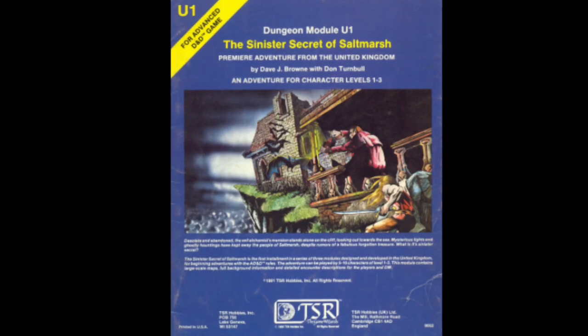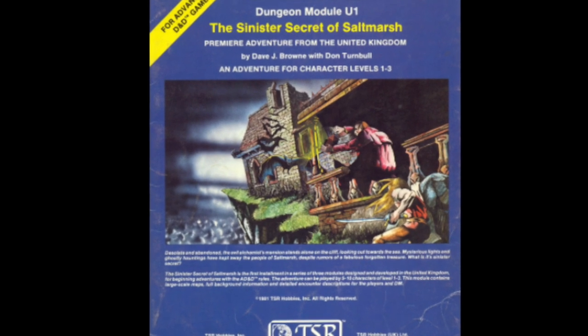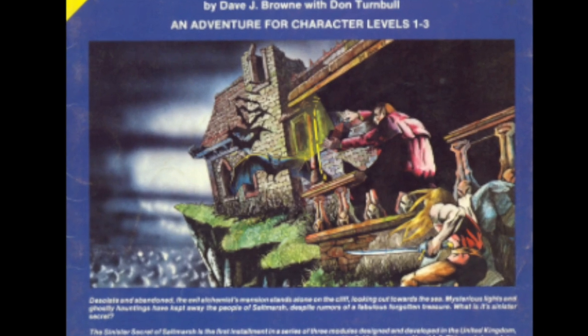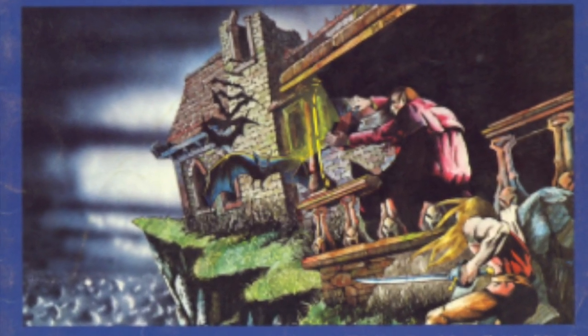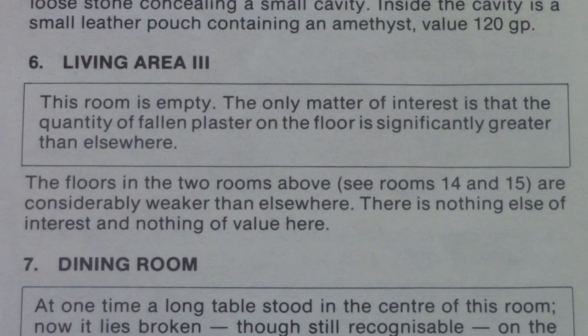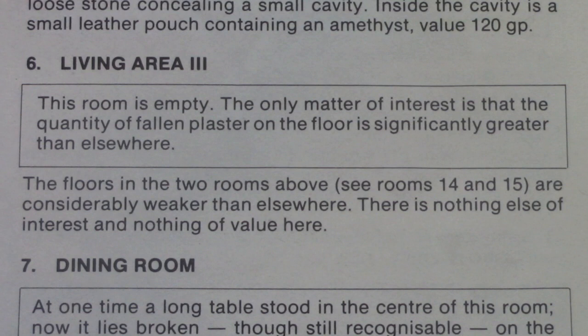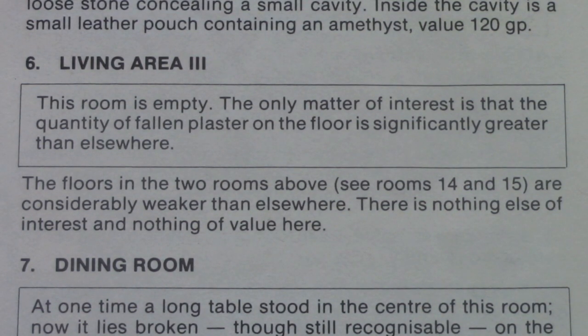Be careful when giving descriptions not to get too colorful and include extraneous details that the players are going to focus on. This happens in even professionally published work. This is the Sinister Secret of Saltmarsh — I think it's the first D&D module to contain mystery elements. Let's take a look at room six, living area three. 'This room is empty. The only matter of interest is the quantity of fallen plaster on the floor, significantly greater than elsewhere. Below it, the floors in the two rooms above — 14 and 15 — are considerably weaker. There is nothing else of interest and nothing of value here.'